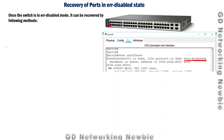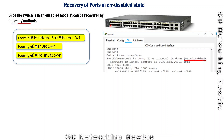Once we are in this error-disabled mode, this can be recovered by one of the following methods. The first method is that we go to that particular interface which is in this state, and then we manually shut it down first by using the shutdown command and then we say no shutdown. After these commands, that port will again be enabled.